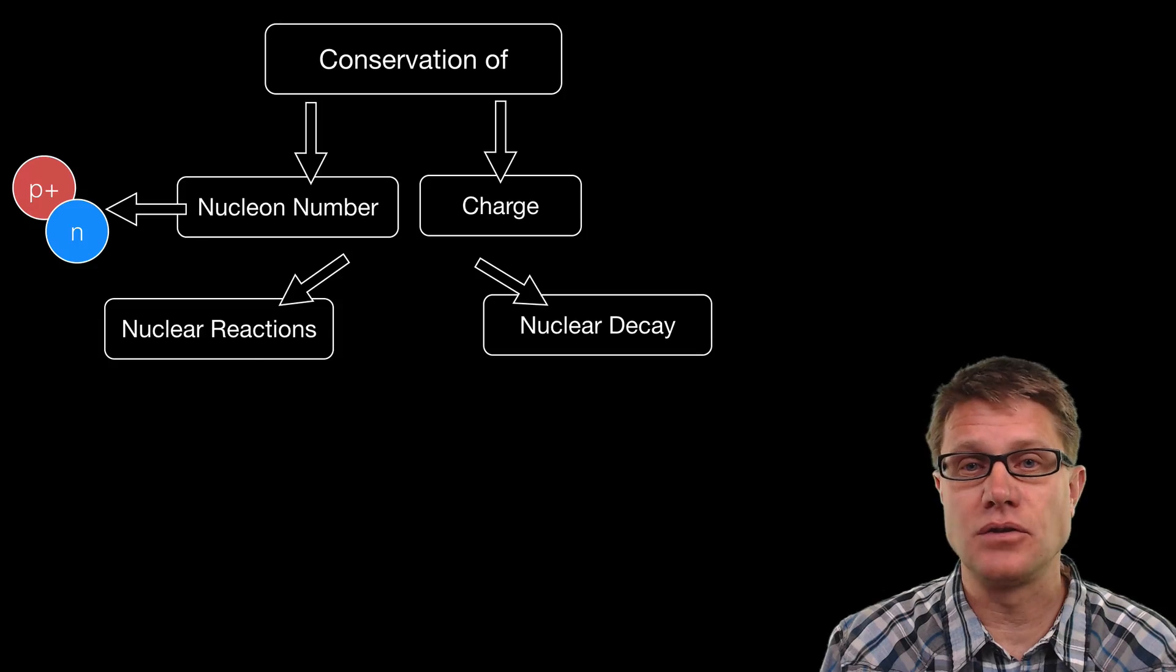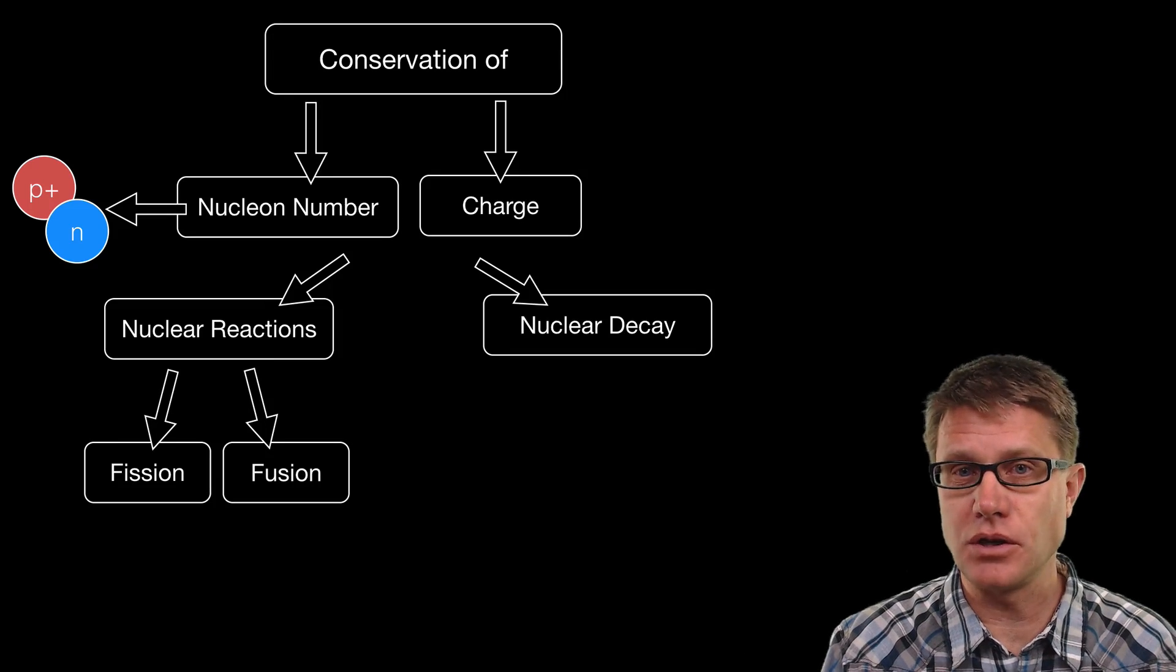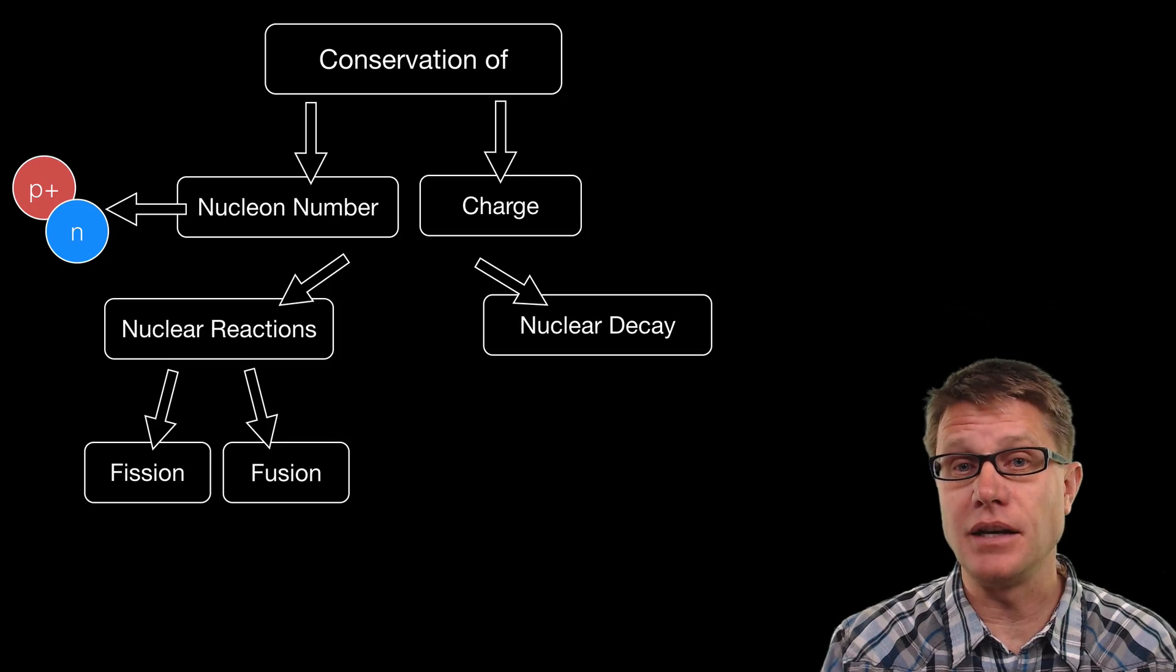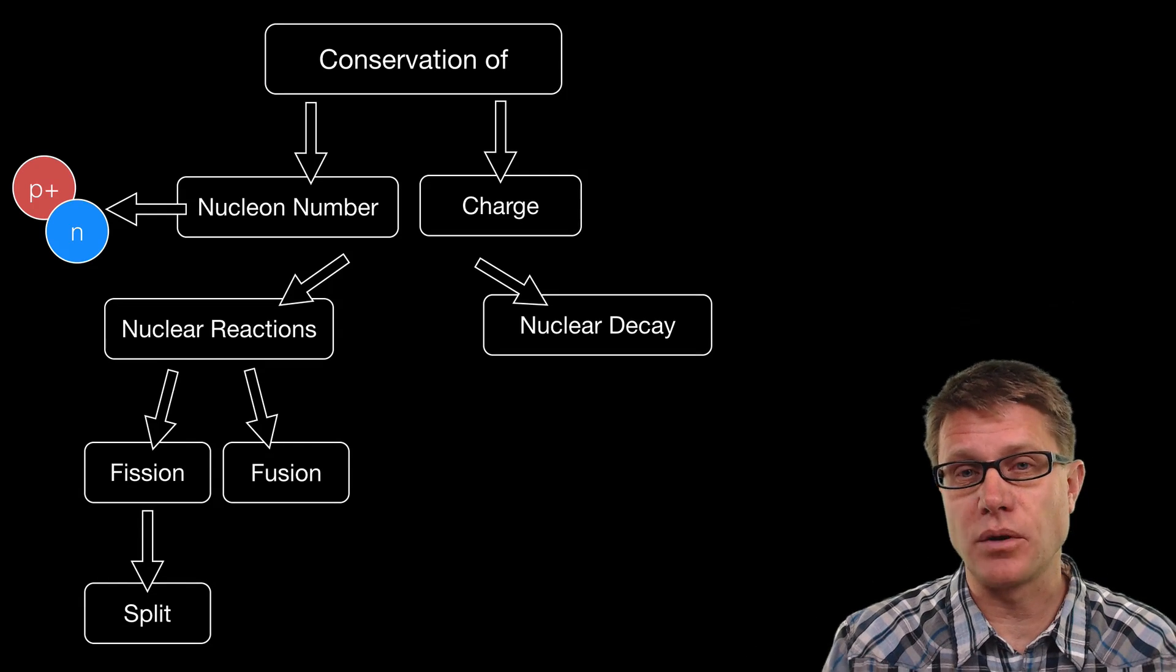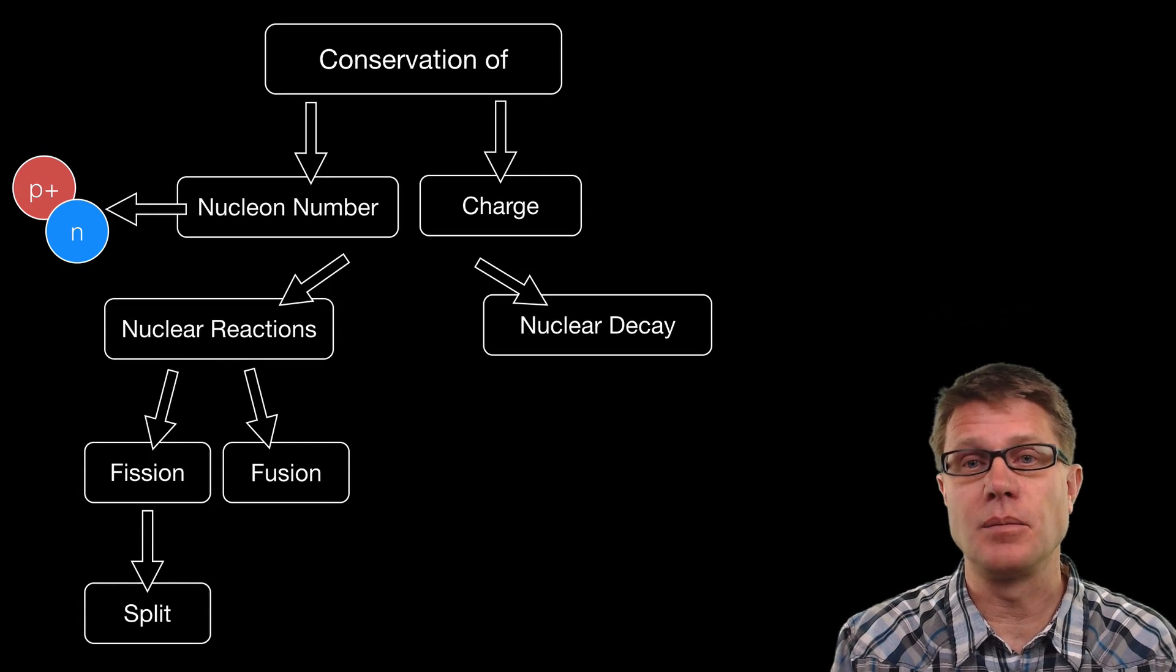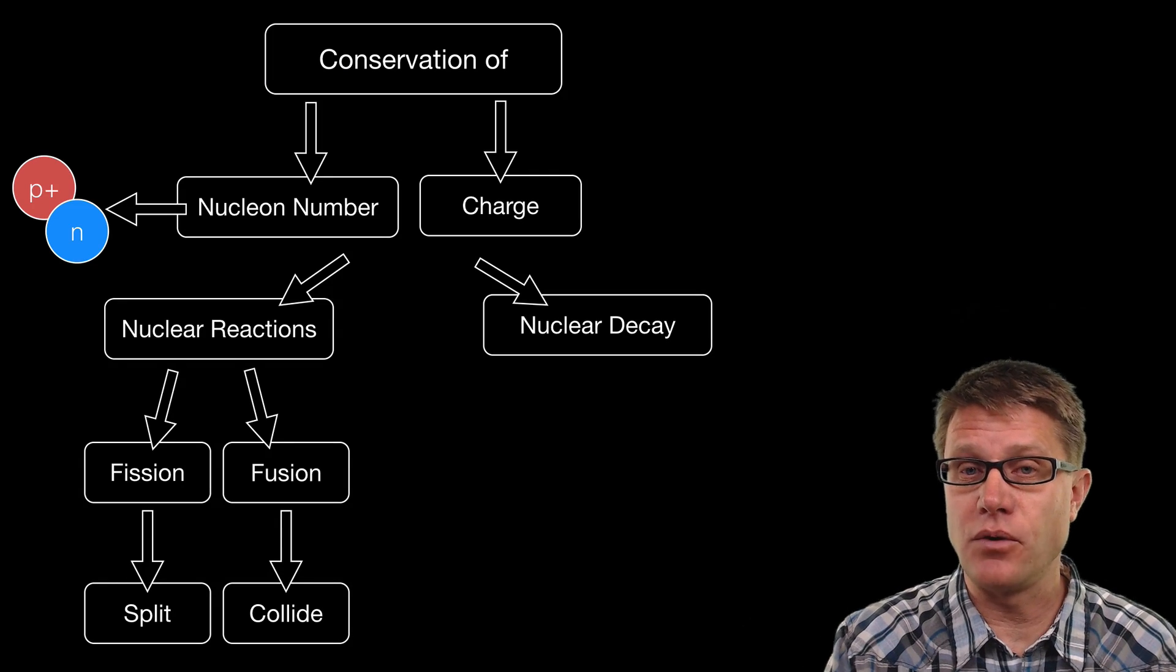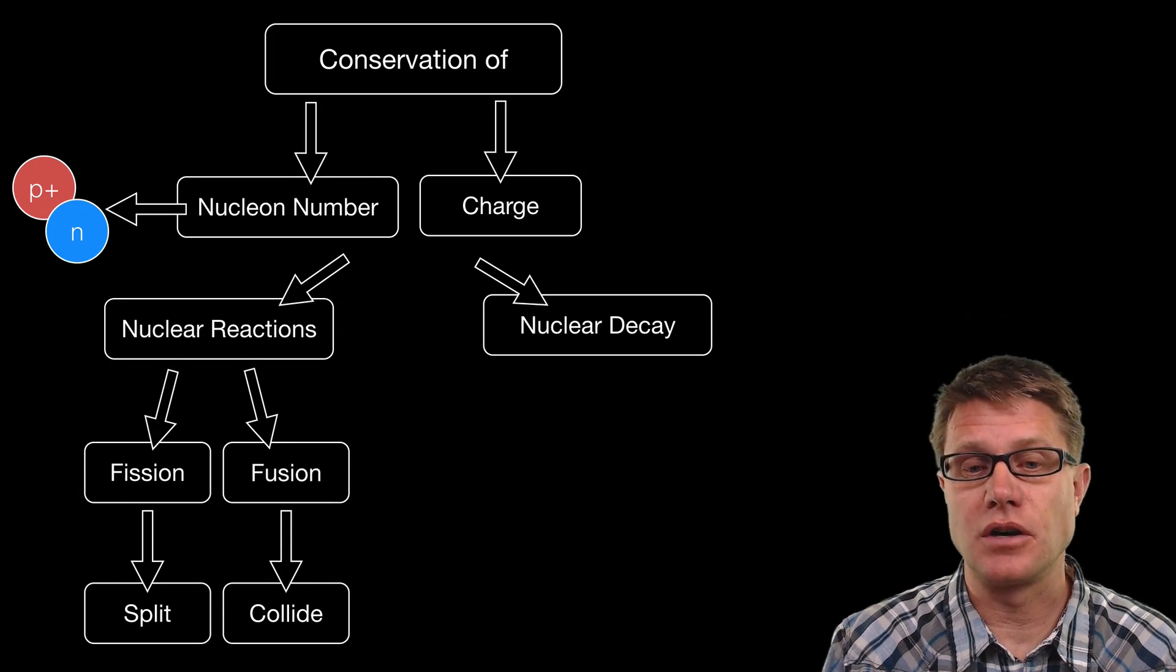And so in nuclear reactions the two types we will talk about are fission and fusion. In fission remember we are taking a nucleus and we are breaking it in half or we are splitting a nucleus. In fusion we are fusing two nuclei together to make a new nucleus. Nucleon number before and charge before has to equal nucleon number and charge after.